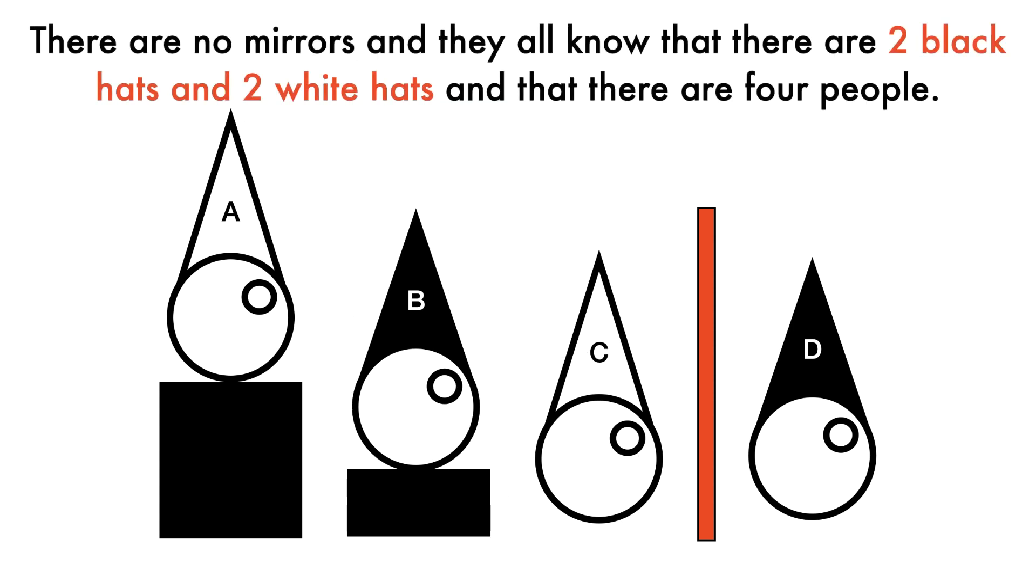There are no mirrors and they all know that there are two black hats and two white hats, and that there are four people. The prisoners are told that they have five minutes and to call out as soon as one of them thinks he knows for certain what color hat he's wearing.